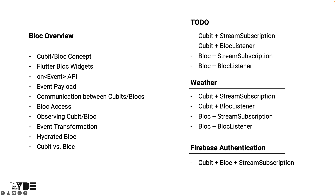In Bloc Overview, we'll look at the basic concepts of Cubit and Bloc, various widgets such as BlocProvider, BlocBuilder, BlocListener, and BlocConsumer provided by Flutter Bloc, and learn about the on event API newly introduced from version 7.2. Next, we'll learn how to provide additional information to Cubits or Blocs in the UI, and how to communicate when one state depends on another, between Cubits or Blocs, and what to watch out for when accessing Blocs in the widget tree.